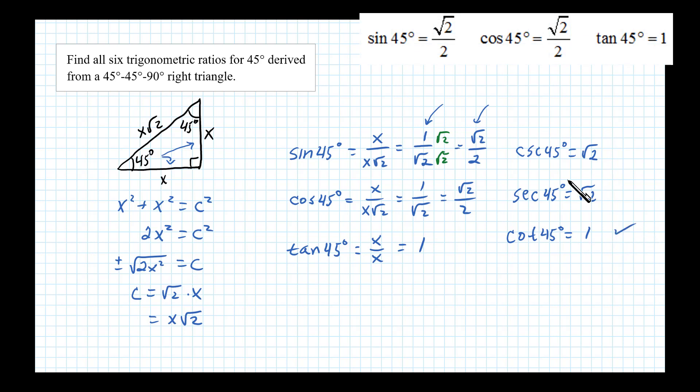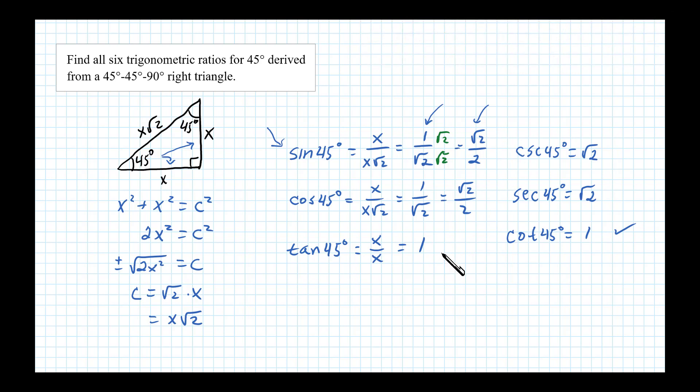So there's your six trig ratios. I encourage you to type these in on a calculator and make sure you get the same results. So you could make sure you're in degree mode. Type in sine of 45 and see that you get square root of 2 over 2, or its equivalent on your calculator. Cosine of 45 is square root of 2 over 2. Tangent of 45 is 1, and you should actually memorize those.